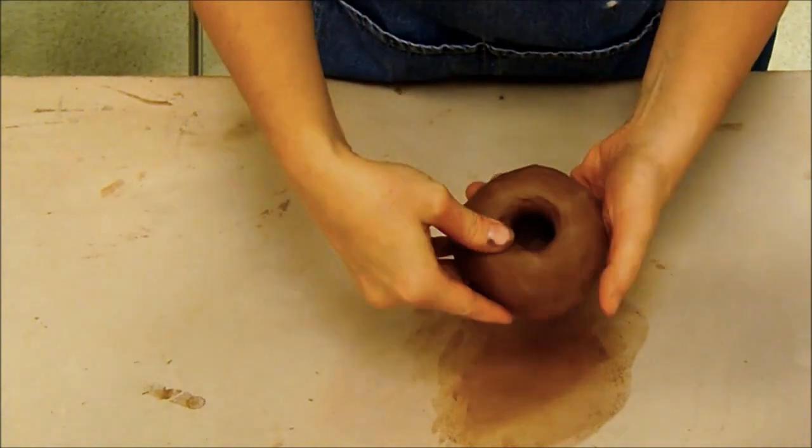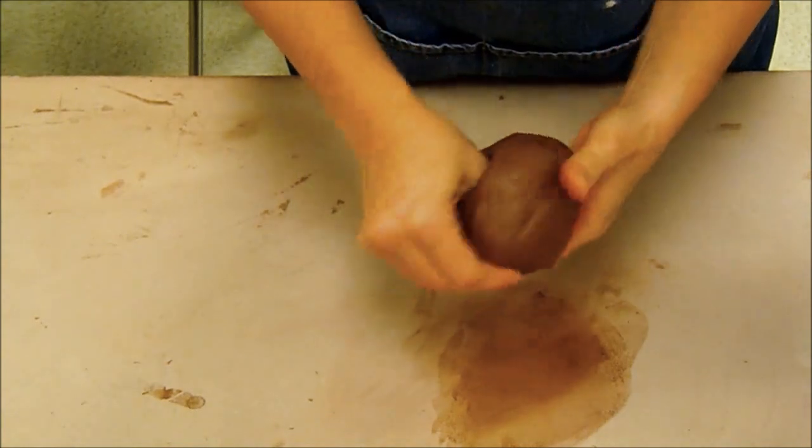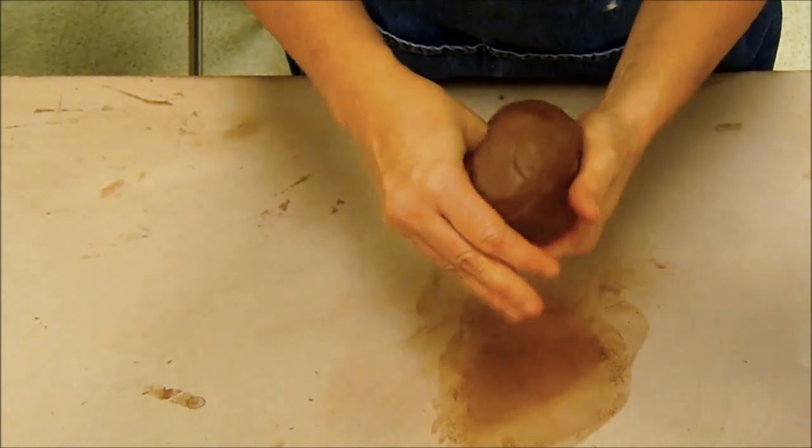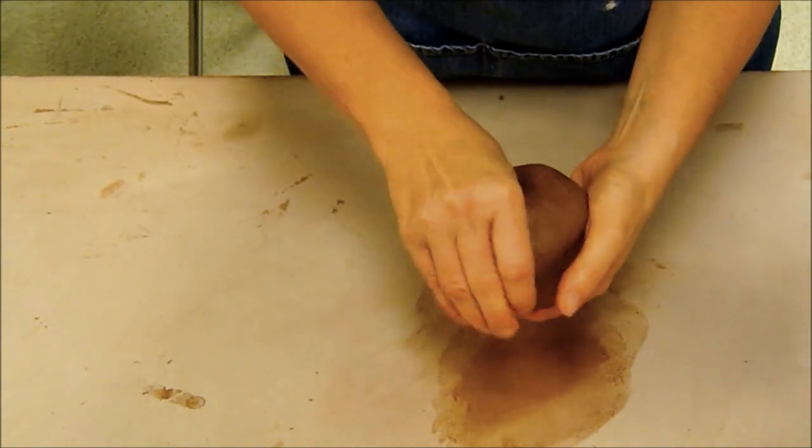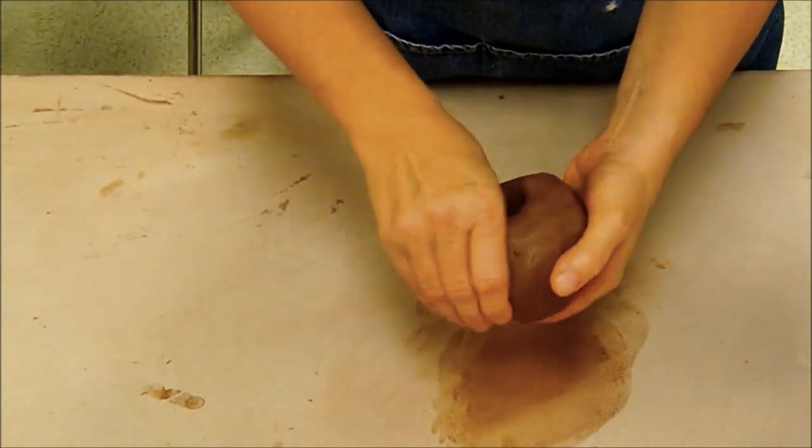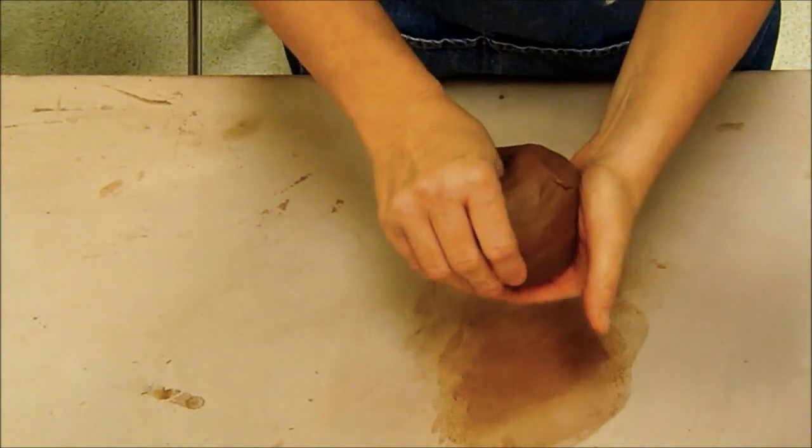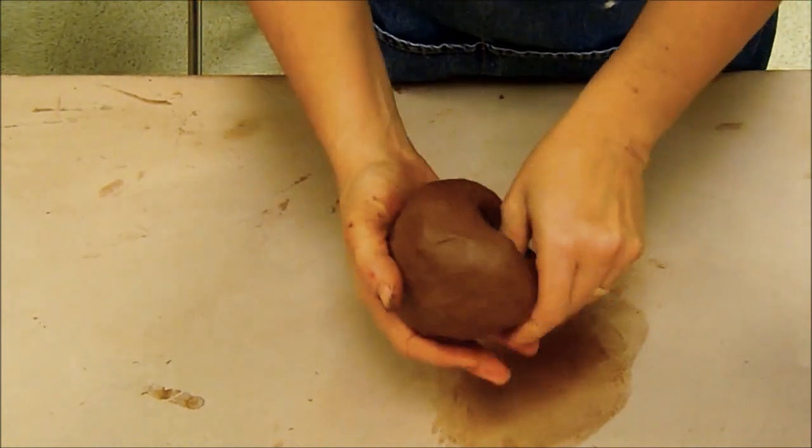So what I'm doing is pressing with my thumb on the inside and I always press the bottom part first. So as I do this I'm thinning the bottom on the inside. The bottom should be roughly, I usually tell people about three-eighths of an inch to a half an inch thick because we can make it a little bit thinner later.